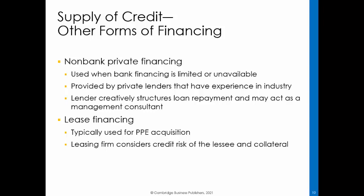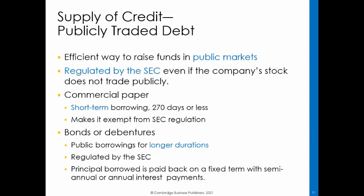The leasing firms analyze the credit risk associated with the lease, bearing in mind that the leased assets are held as collateral and that some of the risk can be mitigated by tailoring the lease terms. Issuing debt securities in capital markets is a cost-efficient way to raise funds. Debt that is offered for sale to the public is regulated by the SEC, even if the company's stock does not trade publicly. Companies issue short-term or long-term debt depending on the specific need for funding. Commercial paper is short-term publicly traded debt that matures within 270 days, which exempts it from SEC regulations. Companies use commercial paper to finance short-term operating needs, and it is issued primarily by financial companies such as commercial banks, mortgage companies, leasing companies, and insurance underwriters, although large manufacturers and retailers also issue commercial paper.